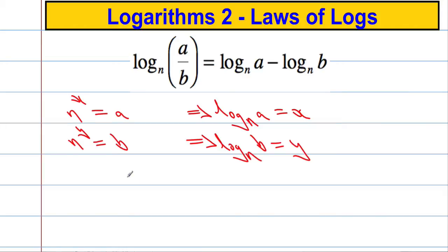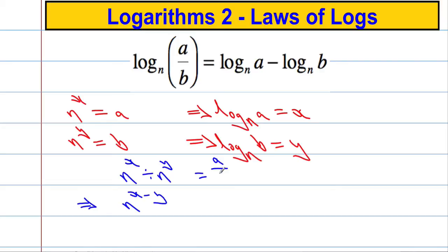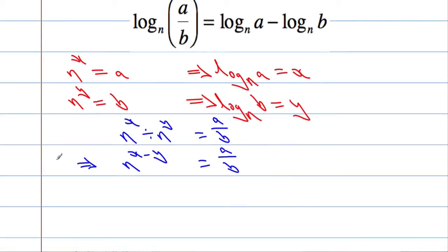Now let's see what happens if we use the division rule for indices. If I do n to the power x divided by n to the power y, that's going to equal n to the power x minus y. And since n to the power x is A and n to the power y is B, this equals A over B. So we have n to the power x minus y equals A over B. Note: that should be a y, not a B — let's make sure that's clear.